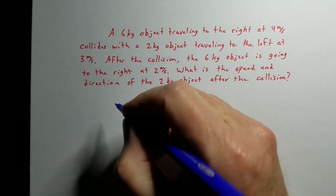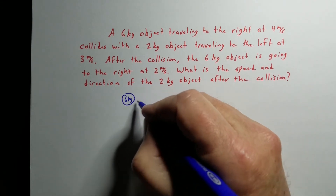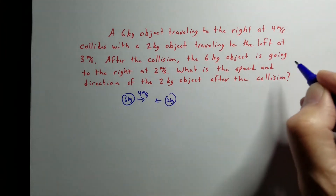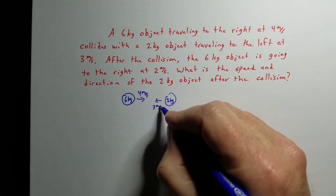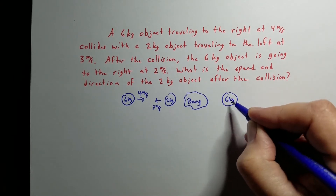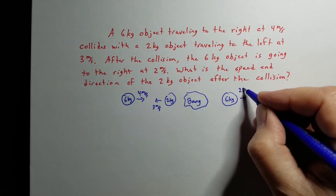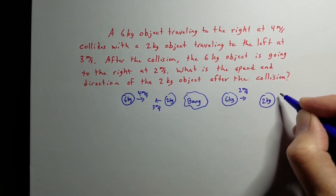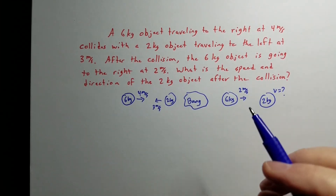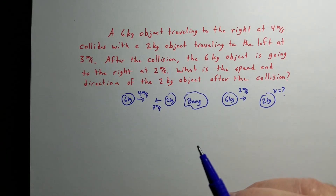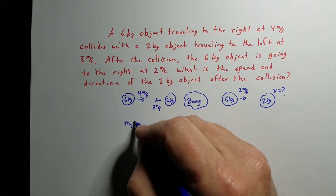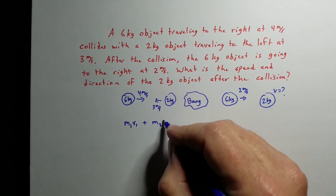I use rectangles and circles for all my objects — it just helps organize the information. So the 6 kg object is traveling to the right at 4 m/s, and the 2 kg object is traveling to the left at 3 m/s. After the collision, the 6 kg object is still going to the right at 2 m/s, and we're looking to find what happens to the 2 kg object. Let's use the generic elastic collision equation: m₁v₁ + m₂v₂ = m₁v₁' + m₂v₂'.